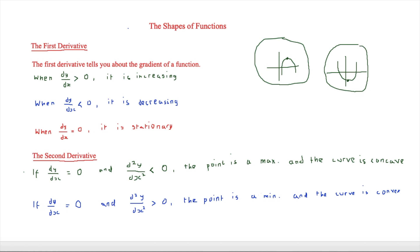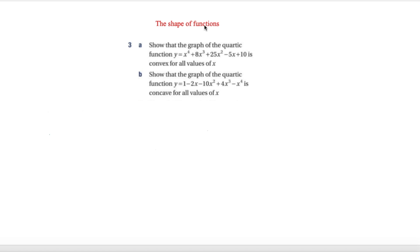Now let's look at a few questions. The first one says: show that the graph of the quartic function y = x⁴ + 8x³ + 25x² − 5x + 10 is convex for all values of x. In other words, we have to show that d²y/dx² is greater than zero for all values of x, so we need to work out what d²y/dx² is.